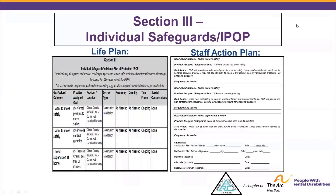At the end of the plan, there is a signature area: the Staff Action Plan author's name, their title, the Staff Action Plan author's signature, and the date they signed the plan. There are areas for other signatures, and those are optional as stated on the bottom of the plan.